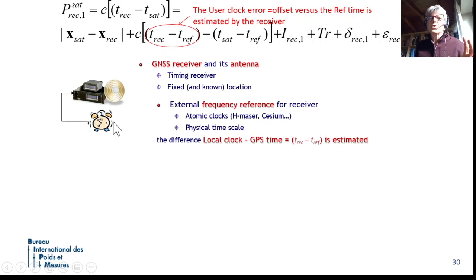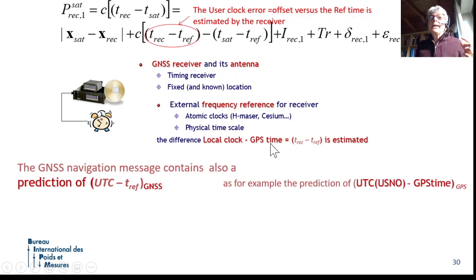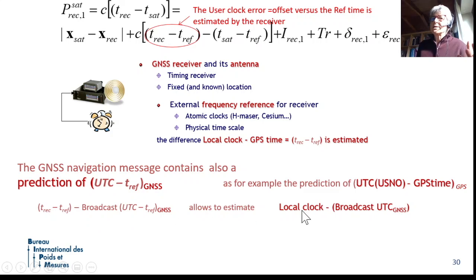With a special receiver, which is called timing receiver, to which you have connected your local clock, you can estimate the offset with respect to the GPS time. Then, in the navigation message, there is an additional information. The satellite system is telling you which is the predicted offset of the system time scale with respect to UTC. For example, GPS is telling you which is the predicted offset of GPS time with respect to UTC-USNO, which is a realization of UTC at the US Naval Observatory. So, you can take this information, this information, you sum the two information, and you can estimate which is the offset between your receiver clock and UTC as broadcast by the GNSS.